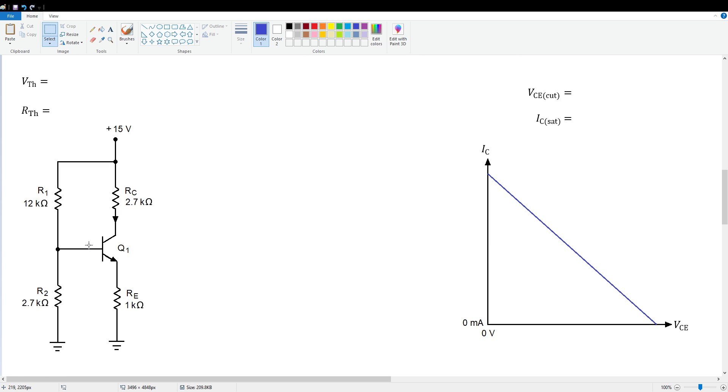Here we've got a circuit. I filled in all of the resistor values. Let's start by finding the values for the Thevenin equivalent. VTH is equal to VCC times R2 over R1 plus R2. So that's 15 volts times 2.7K over 12K plus 2.7K. Crunching through these numbers, we end up with a VTH of 2.76 volts.